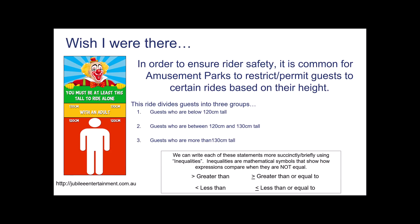So in our story, if I talk about my guests as G, and I say guests who are below 120 centimeters tall, I can express this group of people using an inequality: guests who are less than 120 centimeters. I could do the same thing down here. Guests who are between 120 and 130 centimeters, I could express this way: 120 is less than my guest, and my guest is less than 130. Or more succinctly, my guests are between 120 and 130 centimeters tall. Lastly, guests who are more than 130 centimeters would just be G is greater than 130.